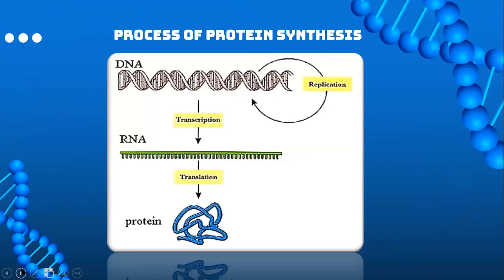This diagram is a simple representation of the process of protein synthesis. As you can see, first the DNA strand replicates itself, meaning it makes a copy of itself. Then, through transcription, it forms an RNA strand — or in this case, an mRNA strand. The RNA then synthesizes into a protein by the process of translation.